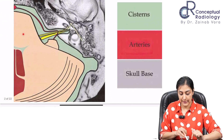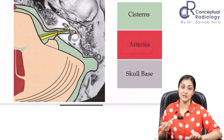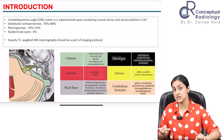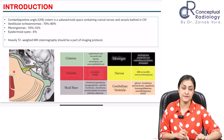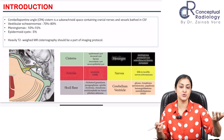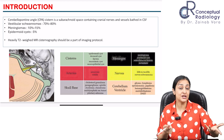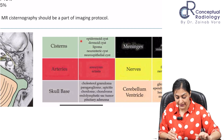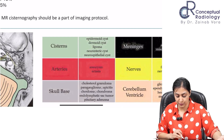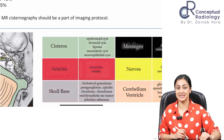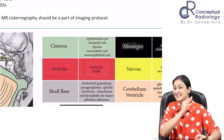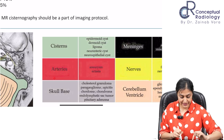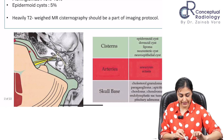Looking at a schematic from a Radiographics article, we can identify possible lesions depending on the contents. The cistern is a CSF space, so all lesions from our intraventricular tumor class can occur here as well — epidermoid, dermoid, lipoma, neuroenteric, or neuroepithelial cysts. Essentially, intraventricular tumor differentials become differentials here.